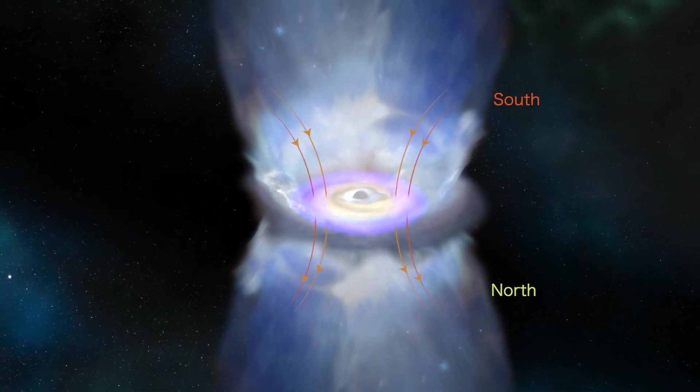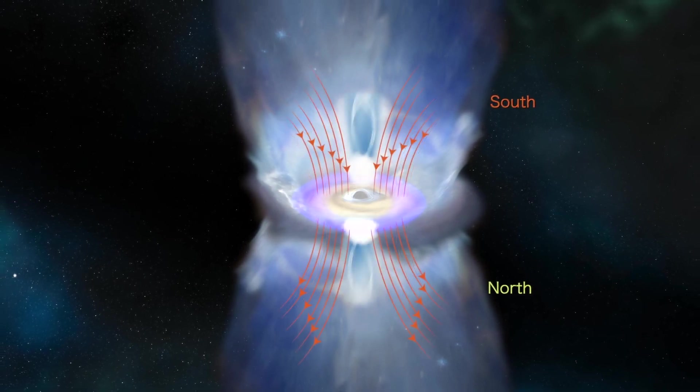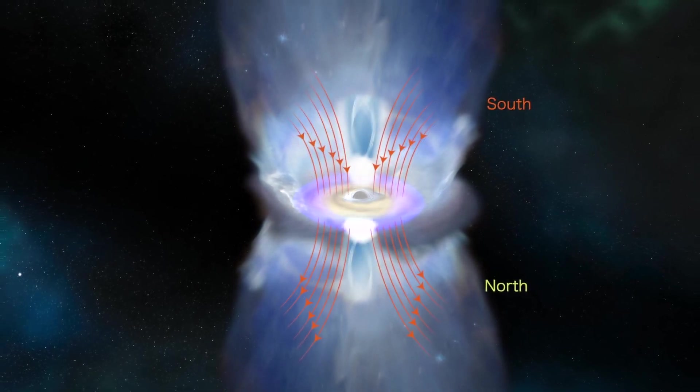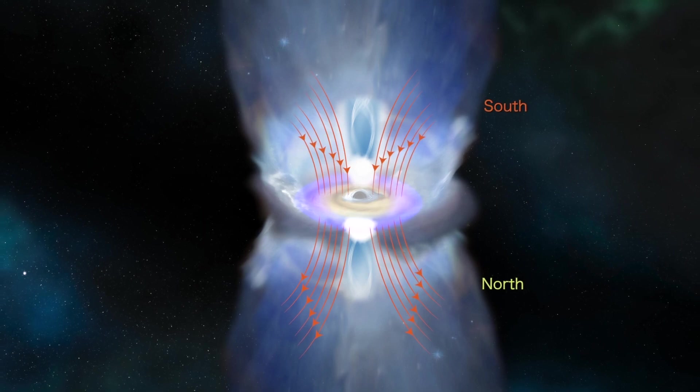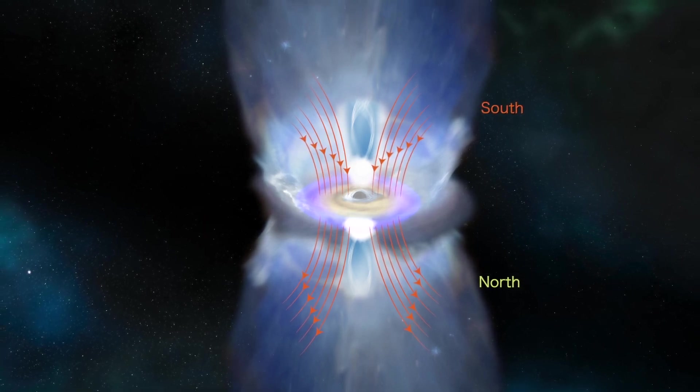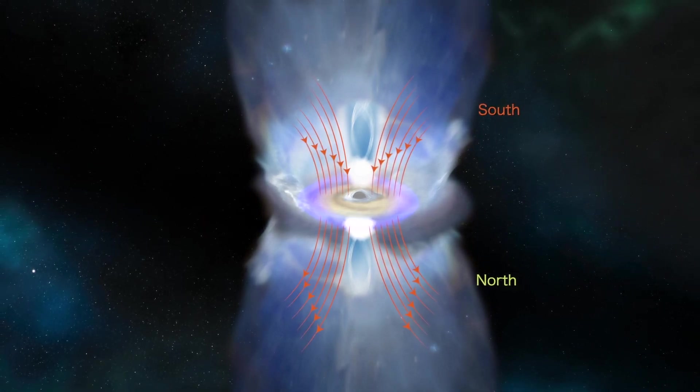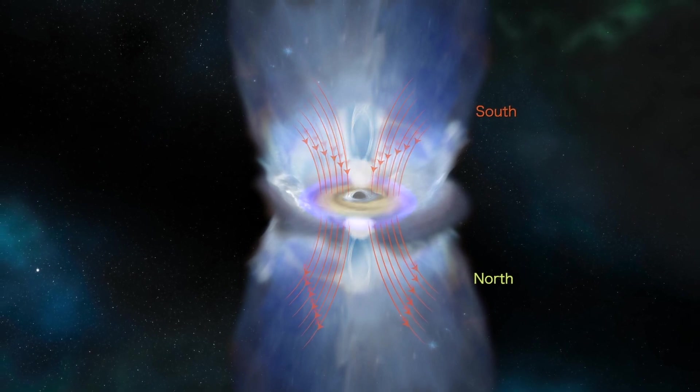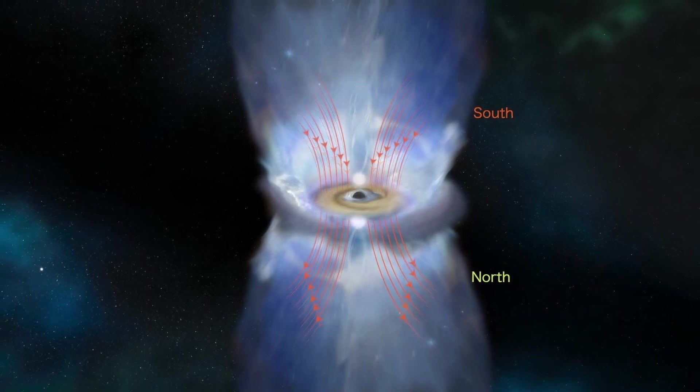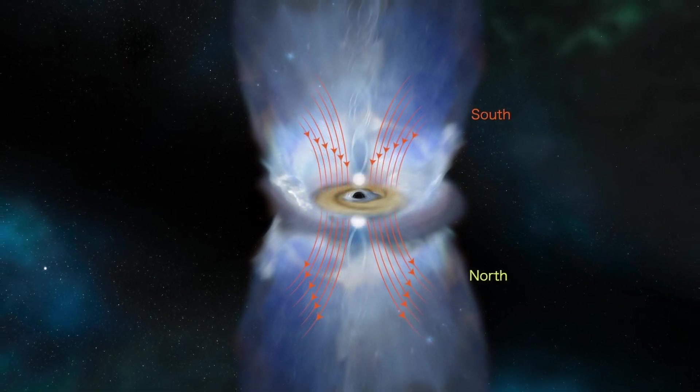The flipped magnetic field gains strength, restoring the X-ray corona. But the inward flow of matter is still high, so this emission is stronger than it was before the flare. Finally, the corona and disk return to their states before the flare, now with a flipped magnetic field.